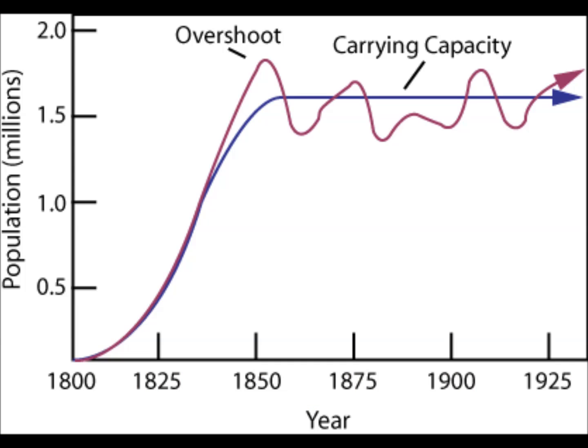Limiting factors are very related to something called carrying capacity. Carrying capacity is the amount of individuals in a population that a habitat can support. There is only enough food, water, and shelter for a certain amount of individuals, and that certain amount is the carrying capacity.